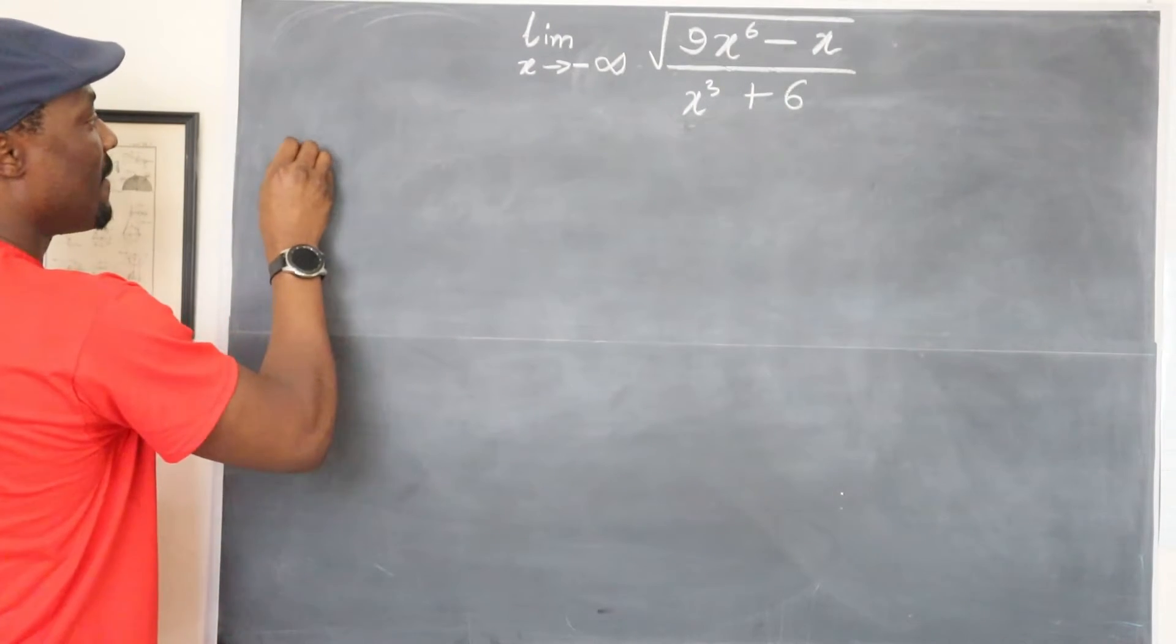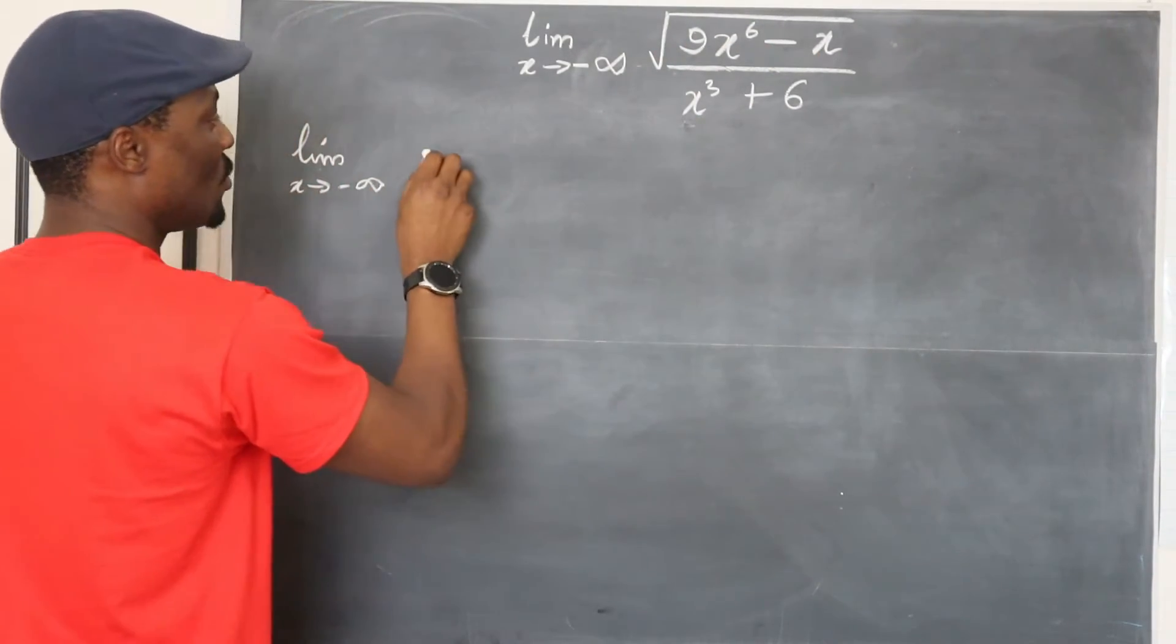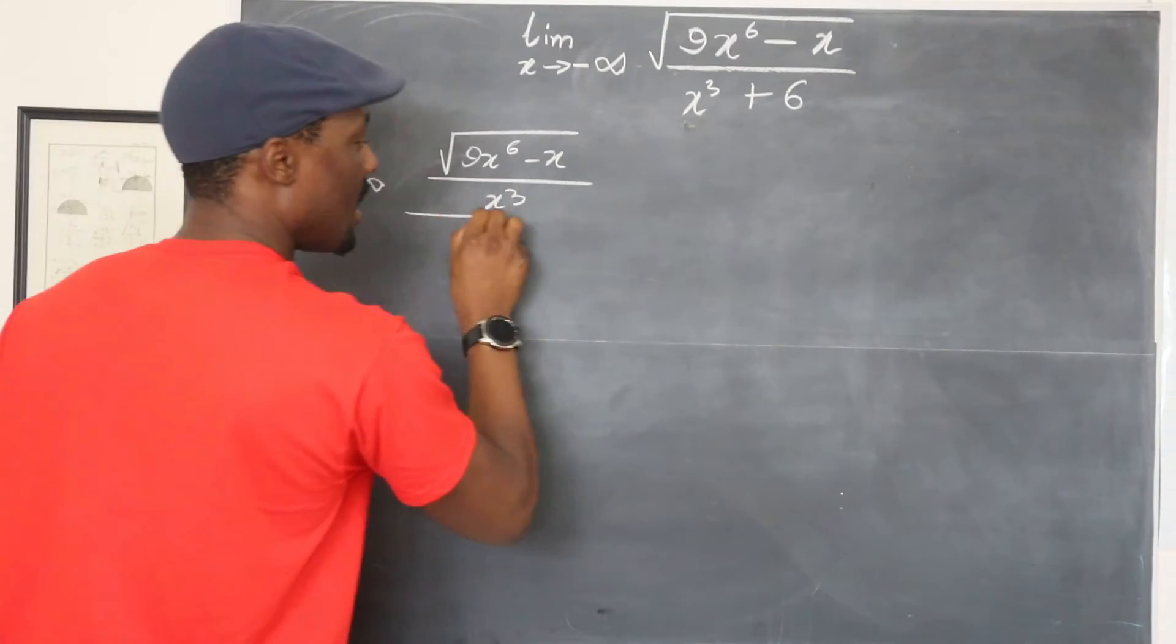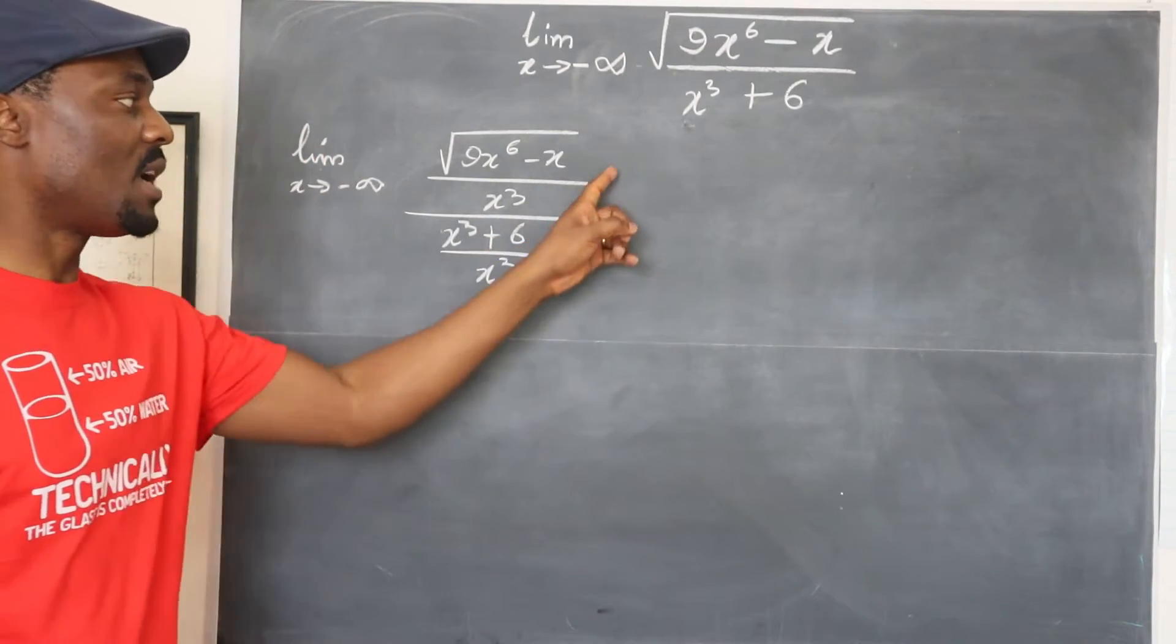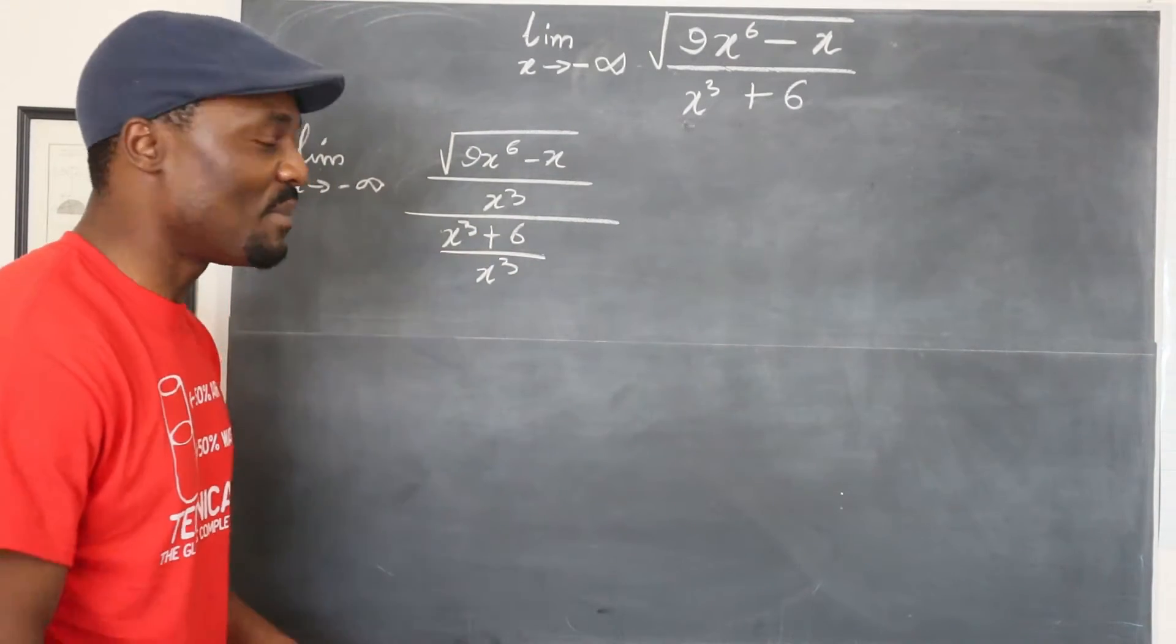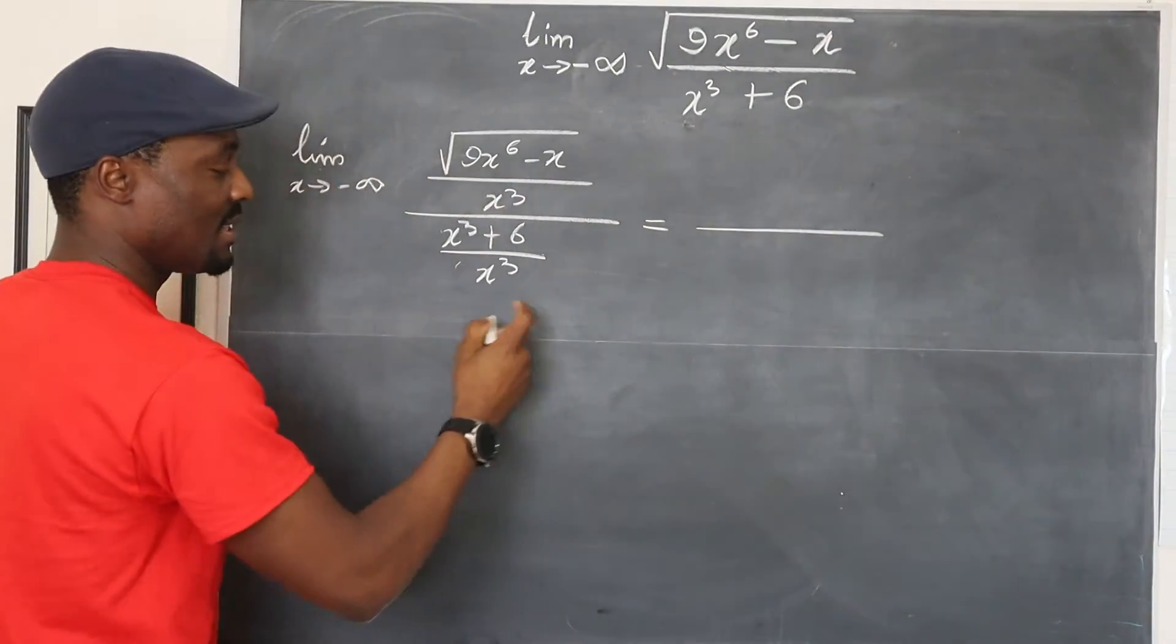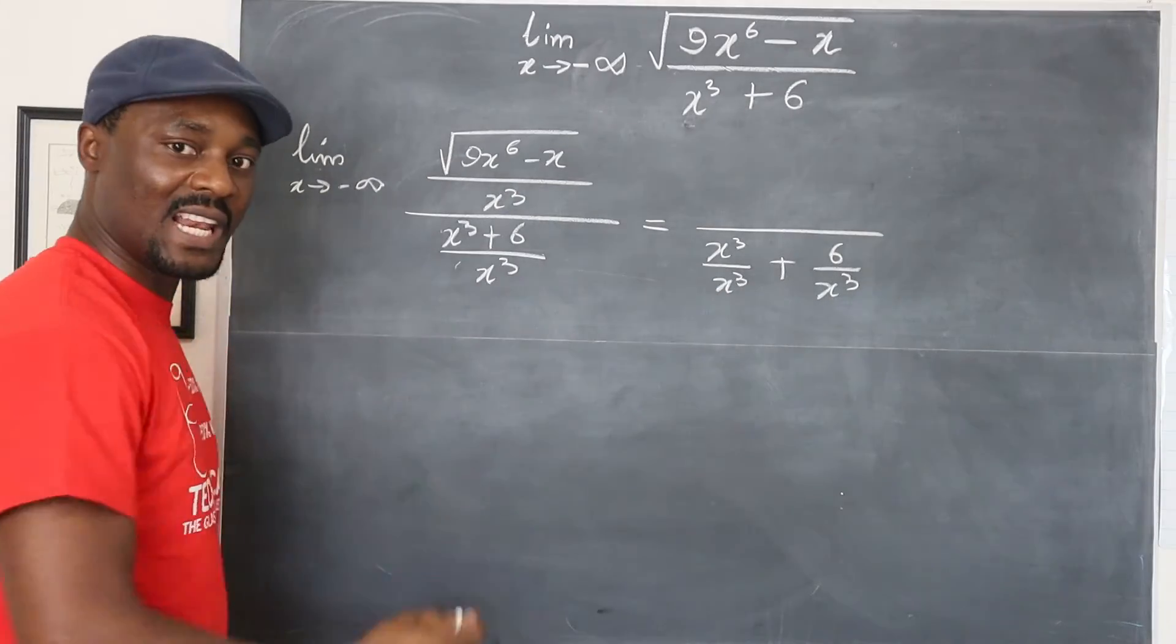So I'm going to write this as the limit as x approaches negative infinity. I'm going to divide everything by this, which is going to be the square root of 9x to the sixth minus x divided by x cubed, divided by x cubed plus six divided by x cubed. So because I divided both top and bottom by the same thing, I have not changed the question. But now I have given myself a way out of this situation. So at this point you can break up the denominator. You can break this up into x cubed over x cubed plus six over x cubed.